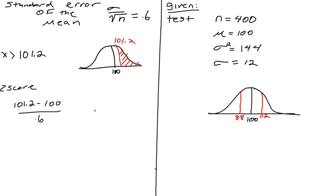101.2 minus 100 that gives us 1.2 over 0.6, which dividing that all out gives us 2.